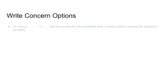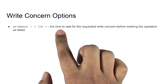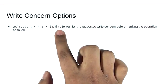There are two additional write concern options that MongoDB provides. The first is W timeout. This lets you set a maximum amount of time the application waits before marking an operation as failed.